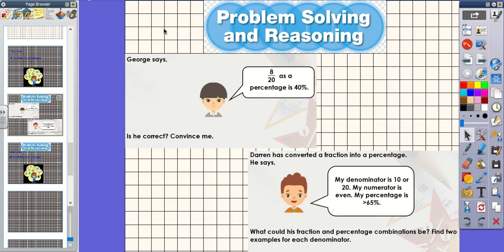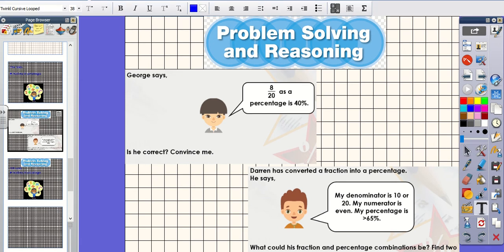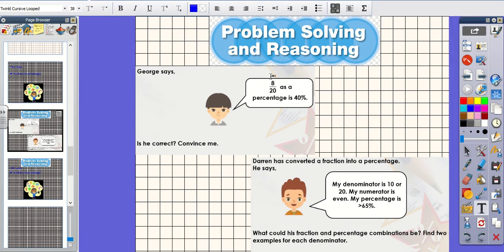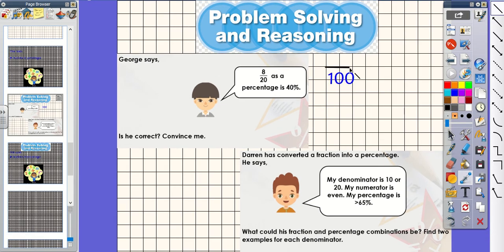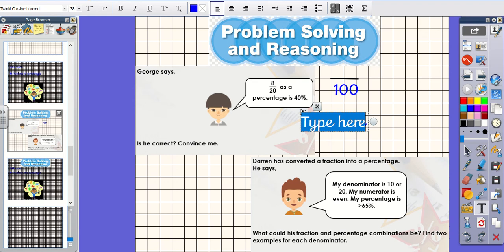Okay then, so let's have a look at some problem solving and reasoning questions. Here we have, George says 8 twentieths as a percentage is 40%. Is he correct? Convince me. So, straight away I can see that this is not correct at the moment to create a percentage. So we need to have a denominator of 100. So, what do we multiply 20 by to get to 100?